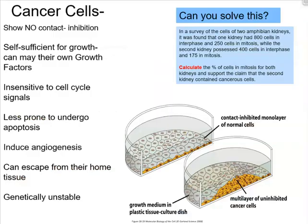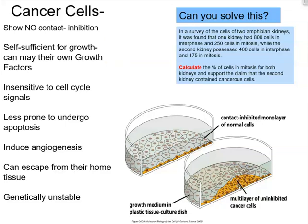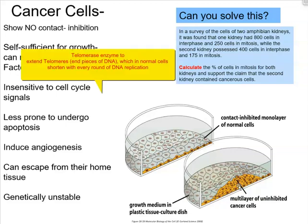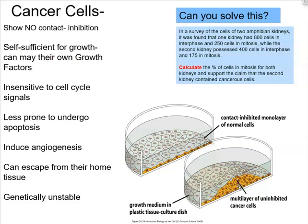Cancer cells show no contact inhibition. Normal cells in a petri dish divide until they form a monolayer, while cancerous cells pile on top of one another — that is how tumors form. Cancer cells are very self-sufficient for growth; they can produce their own growth factors through autocrine signaling, stimulating their own DNA replication and cell division. They also have telomerase to extend telomeres.